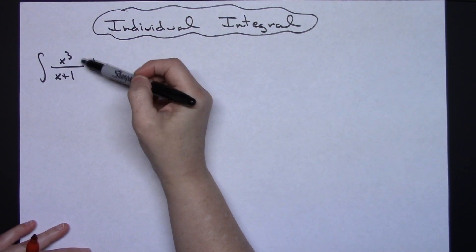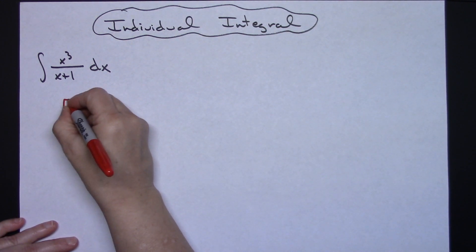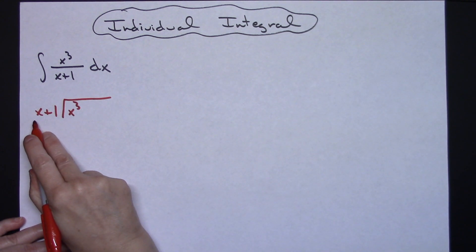We're going to take this rational expression and do some long division. We'll put that X³ on the inside and the X+1 on the outside.